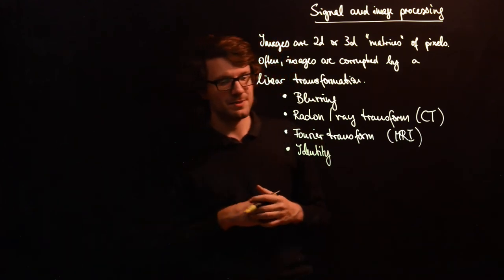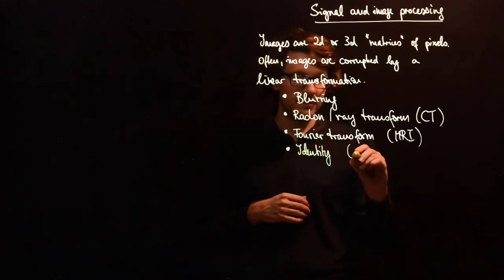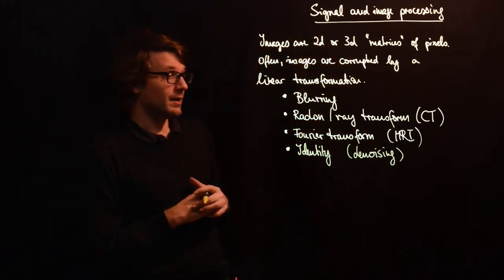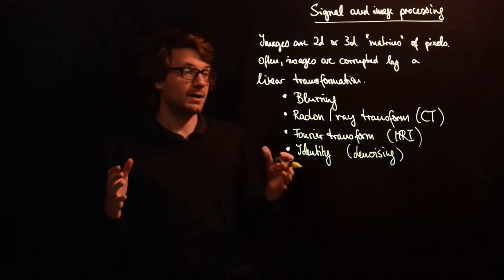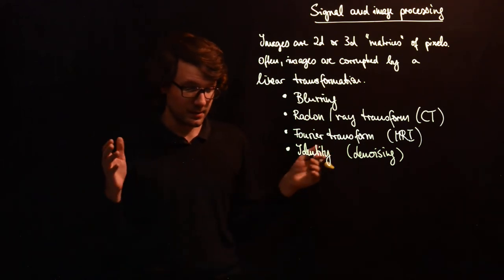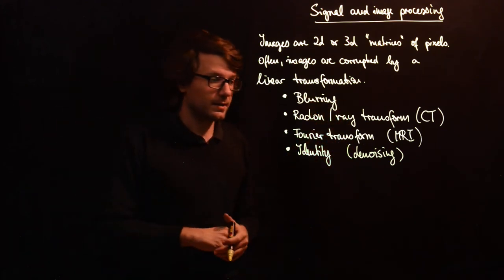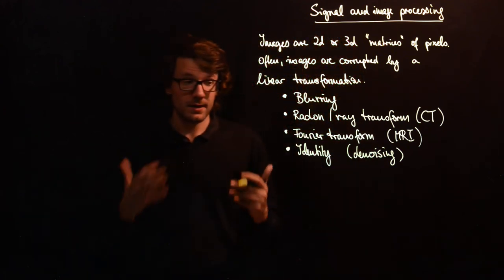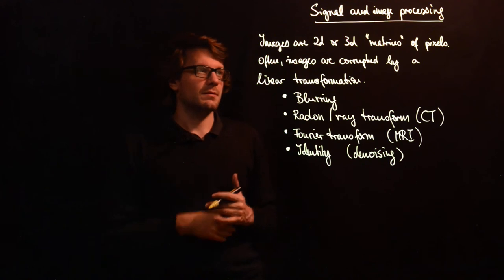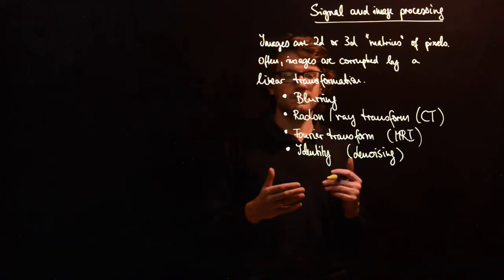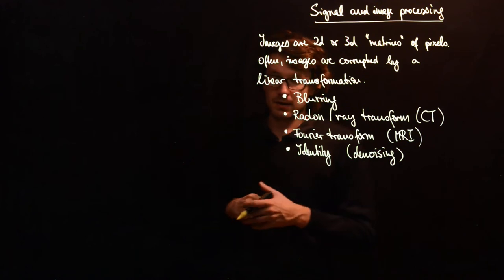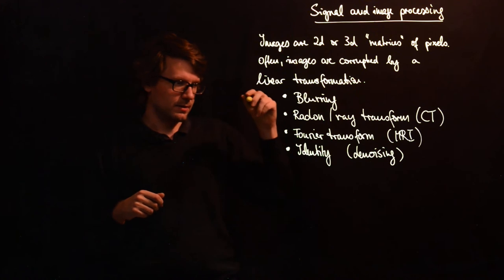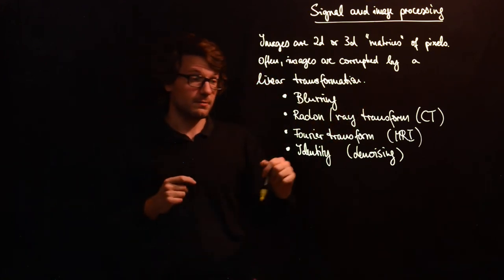Another case would be if you actually don't have a linear transformation, you just take the identity. Then you might think of this as a denoising problem where you have an image and you just add some noise because for example the exposure time was too short or something like that, and then you want to get rid of the noise. Then the transform you choose is the identity. Denoising can also be useful for signal processing when you have a time dependent signal and you have a lot of noise and you want to get rid of this noise to get the actual signal out.